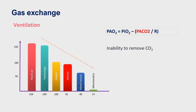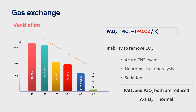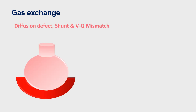In conditions of defective ventilation, where there is an inability to remove carbon dioxide — such as acute CNS events, neuromuscular paralysis, and sedation — both PAO2 and PaO2 are reduced. Even here, we note that the alveolar-arterial difference is normal.